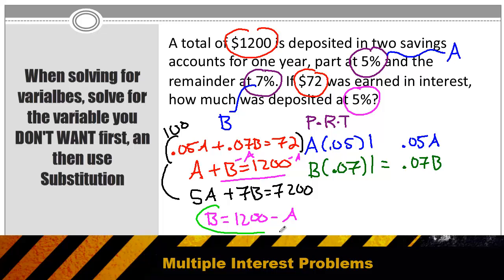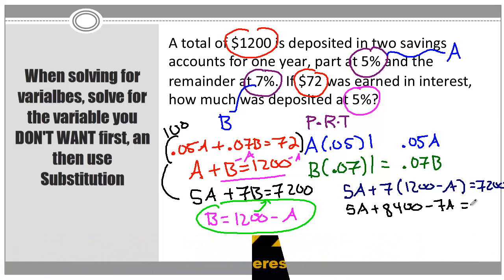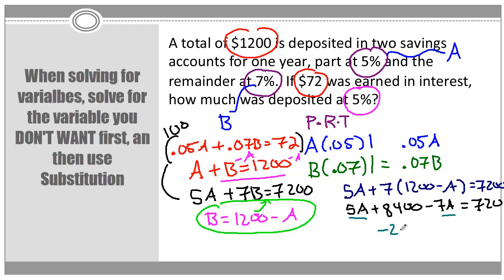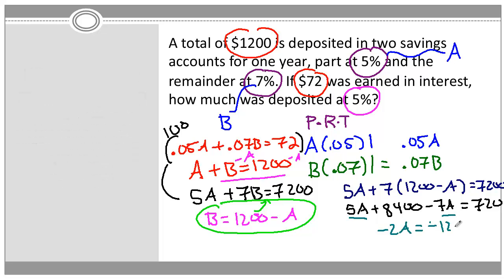Then I can take that definition of B and plug it into my other equation. So now my equation is 5A plus 7B, which is 1200 minus A, that's equal to 7200. Or 5A plus 8400 minus 7A is equal to 7200. I combine my A's and subtract 8400 from both sides and I get negative 2A is equal to negative 1200. Or A is equal to 600.